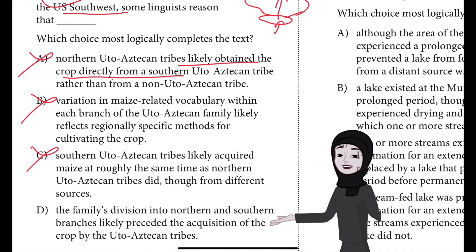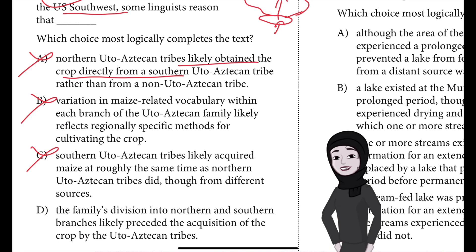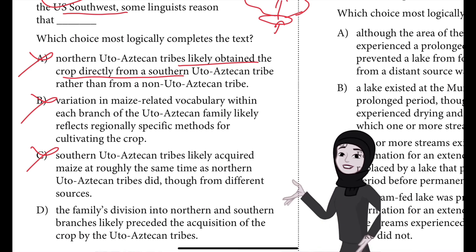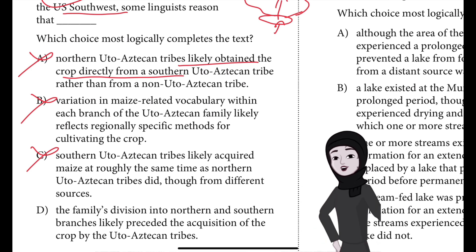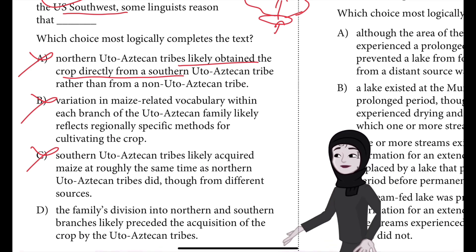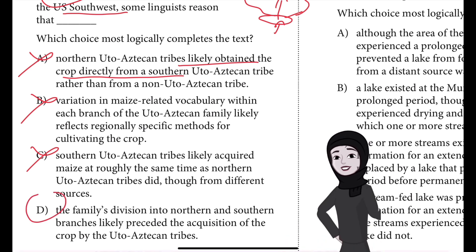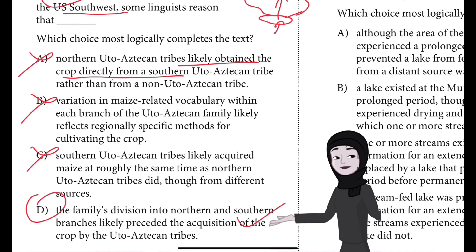C is incorrect because referring only to the timing and source of maize acquisition wouldn't directly address the role of language. Furthermore, the text implies that southern Uto-Aztecan tribes probably acquired maize before the northern tribes did, given that maize originated in Mexico — the location of the southern branch's best-known representative — before spreading northward.